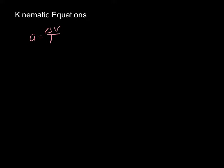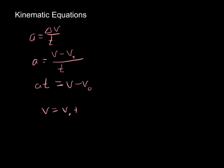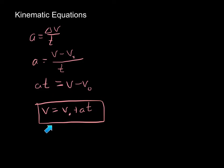For our third kinematic equation, we start with acceleration equal to Δv over t — our mathematical definition for acceleration — and separate Δv into v minus v₀, our final velocity minus initial velocity, over time. Rearranging and solving for velocity: multiply both sides by t to get at equals v minus v₀, then add v₀ to both sides to get v equals v₀ plus at. This equation is useful to figure out how fast you're going after accelerating for a period of time.